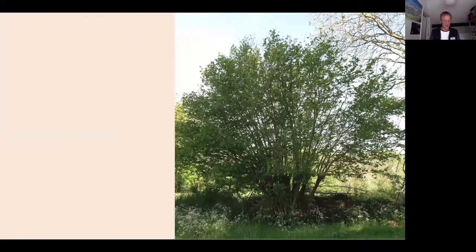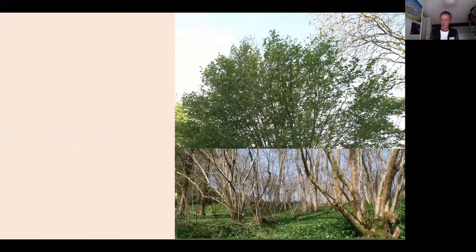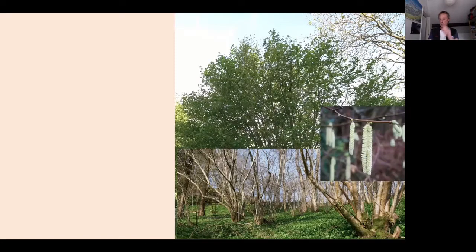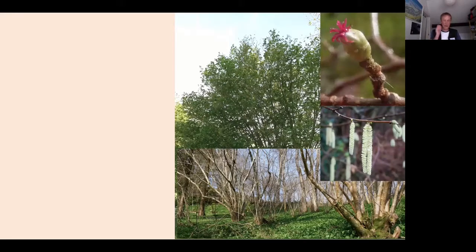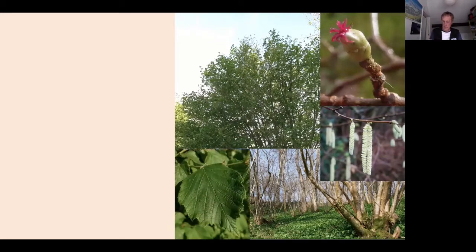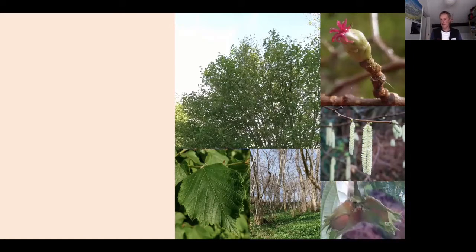Another tree in the birch family grows to about 12 meters, not with a single trunk but in many stands. It makes beautiful coppice — individual trees live about 80 years, but a coppiced stool can live over a thousand years. The male catkins extend in January — known as lamb's tails. There's also a tiny red female flower on the same tree. The nut is the thing we might recognise it by — it's hazel. Who likes Nutella? Each jar contains 52 hazelnuts, and Ferrero consumes a quarter of all annual hazelnuts worldwide.